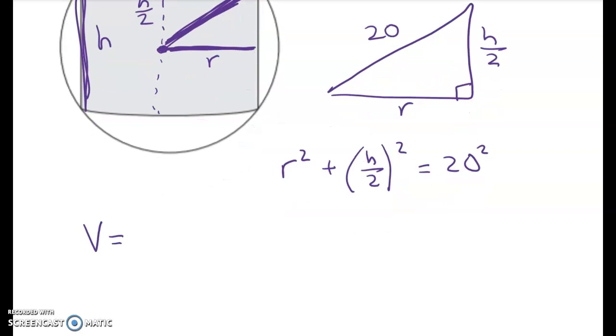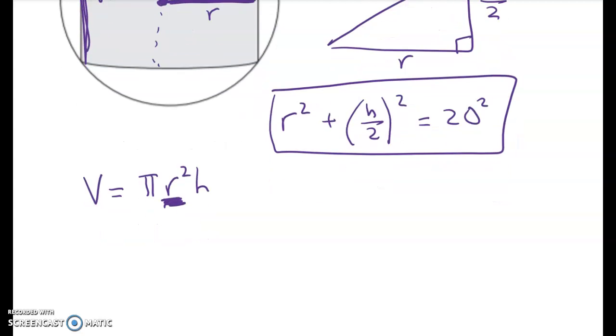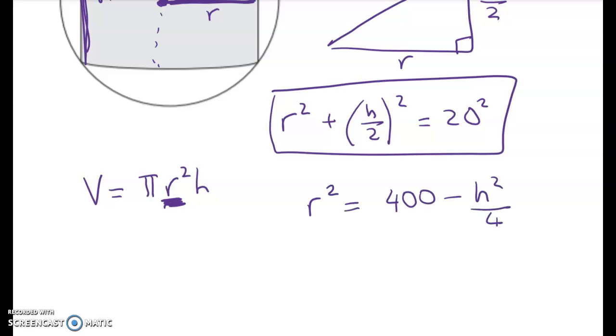Now look at what we need for our formula. Because we can reduce our workload a little bit here. We've got V equals pi R squared H. So I'm going to choose to rearrange this to get R squared. And then I can substitute R squared. That way I can avoid any square root signs. So R squared is equal to 400 minus H squared on 4.